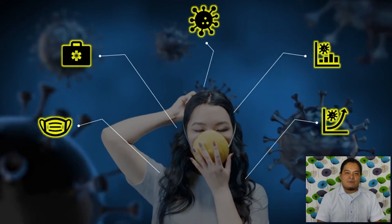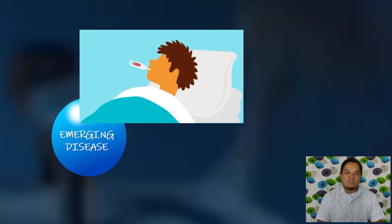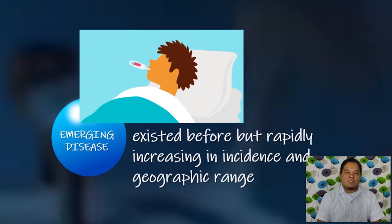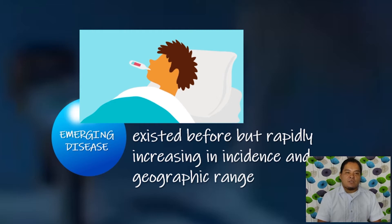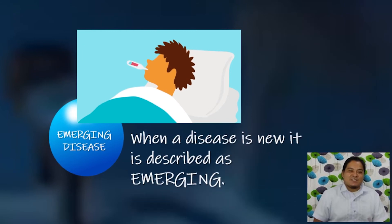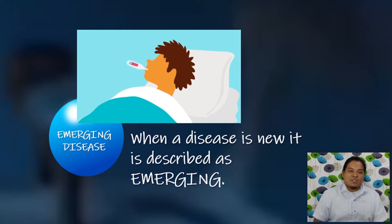Let us have emerging diseases. These are diseases that newly appear in the population or that have existed before but are rapidly increasing in incidence and geographic range. These are also the outbreaks of previously unknown diseases and persistence of infectious diseases that cannot be controlled. This means that when a disease is new, it is described as emerging, and when a disease brings large numbers of infected persons from one country to another, it is classified as an emerging disease.